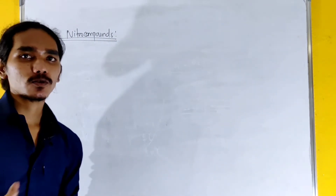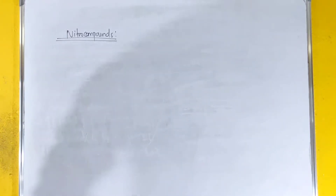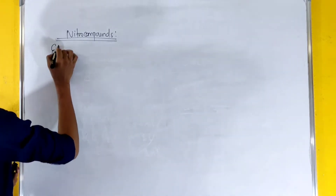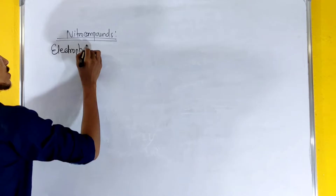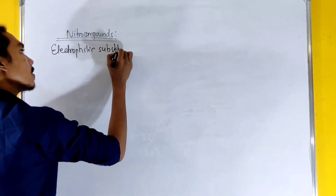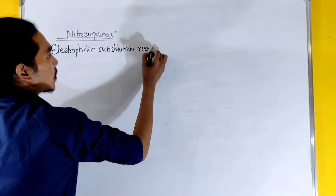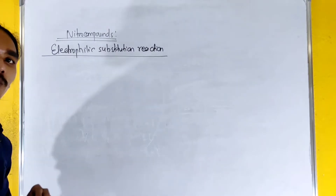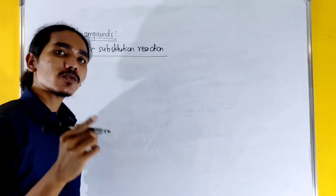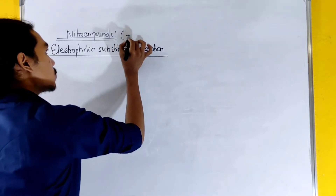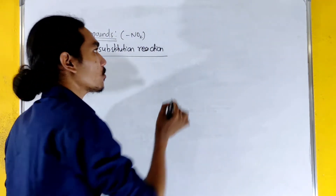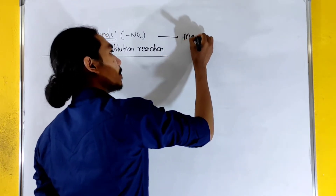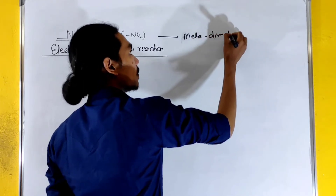First of all, we will be doing an electrophilic substitution reaction. This is the first topic — an electrophilic substitution reaction, also called an ESR reaction. In the electrophilic substitution reaction, the Nitro Compound, which is NO2, is meta-directing.